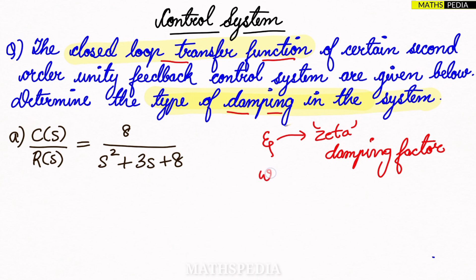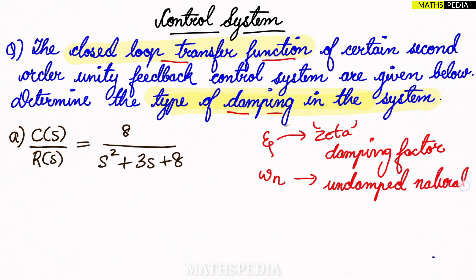One more variable will arise, which is omega_n — the undamped natural frequency. Always remember that these two values, zeta and omega_n, will determine the dynamic behavior of the given system.